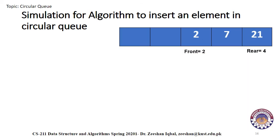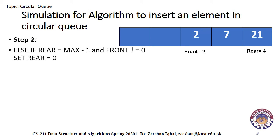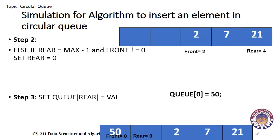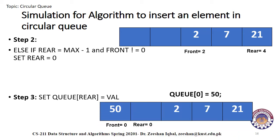Suppose we have a case where the queue has three elements, front value is two, and rear value is four as shown in the figure. In this case, the else if condition — rear equals max minus one and front is not equal to zero — will be true. We will set the new rear to zero position directly. Suppose we want to add 50 as the new value; control will move to step three and we'll set queue of zero equal to 50. After the insertion, the queue will look like this.